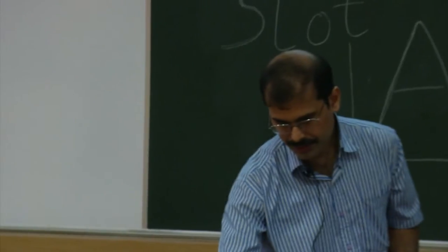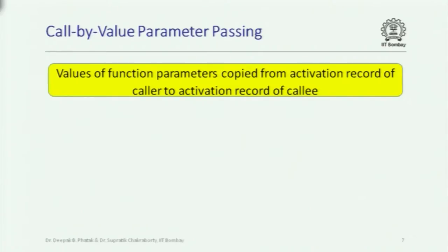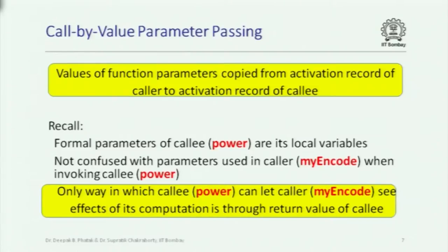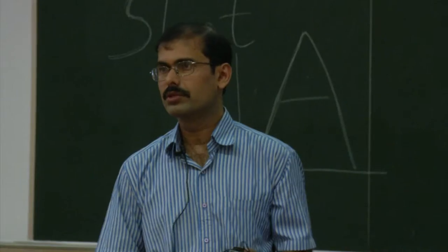Call by value parameter passing is when values of the function parameters are actually copied — you get a fresh copy of the values, copied from the activation record of the caller to the activation record of the callee. The formal parameters of the called function are just like its local variables and will never be confused with the variables of the calling function — they are local to each function. If you are doing call by value, the only way the callee can communicate to the caller what it has done is through the return value, because it works on copies and not on the actual variables of the calling function.